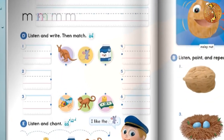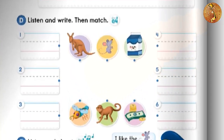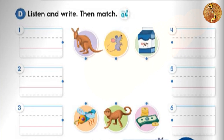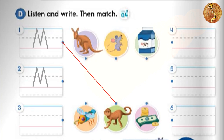Page 45. D: Listen and write, then match. 1. Monkey, monkey. 2. Milk, milk.